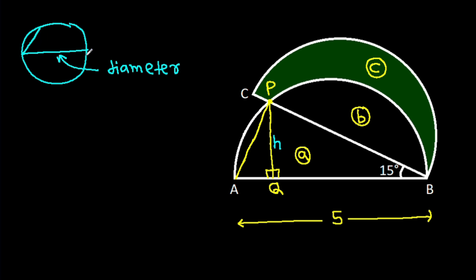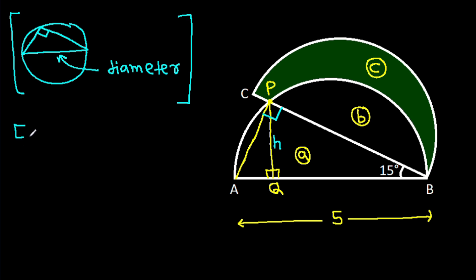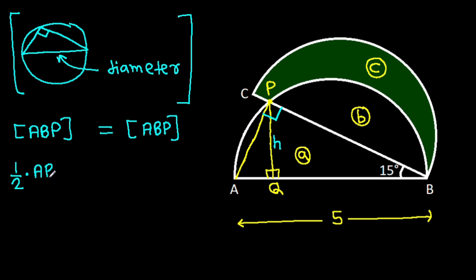In any circle, a diameter makes an angle of 90 degrees on the circle, so angle APB equals 90 degrees. Area of triangle ABP equals one-half times base AB times height, and area of ABP equals one-half times base AB times height BP.